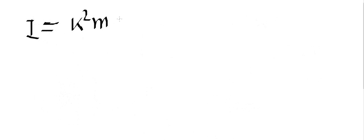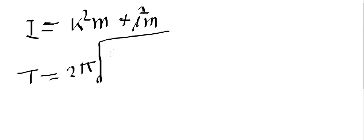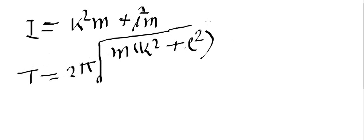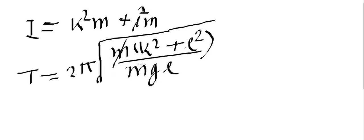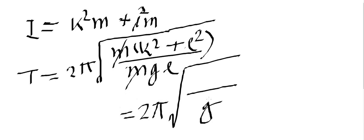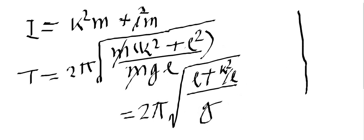So with I equal to m times (k squared plus L squared), substituting in and cancelling the m terms, we arrive at an expression for T in terms of L. At some point, we can see that this equation here — T versus L — if we graph it, it gives a graph with a particular shape.